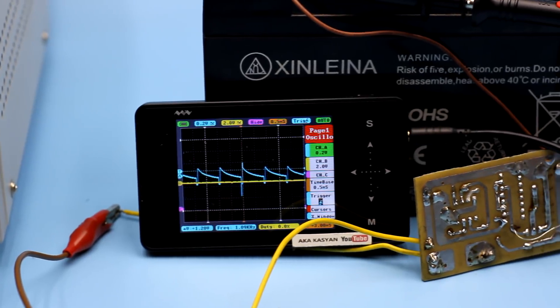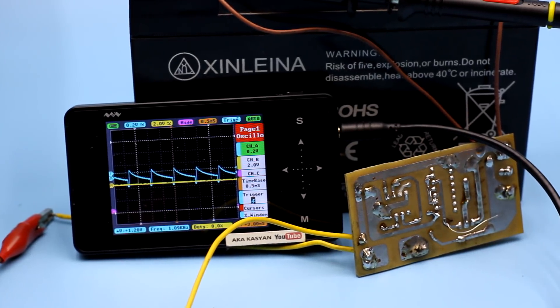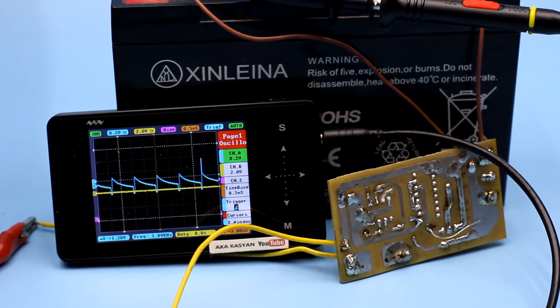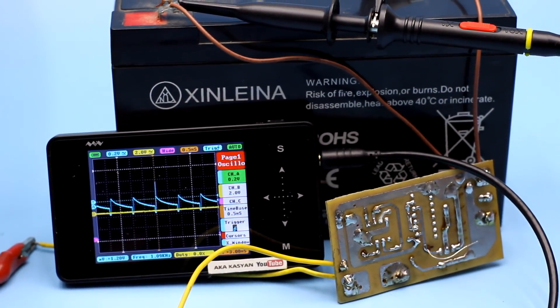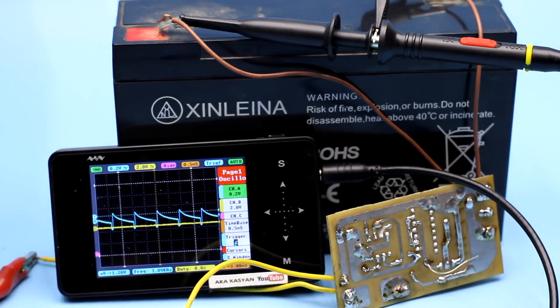The process occurs more than a thousand times per second. That is, the battery is supplied with a short-duration high-voltage pulses at a high frequency. This is what destroys the sulfate film.